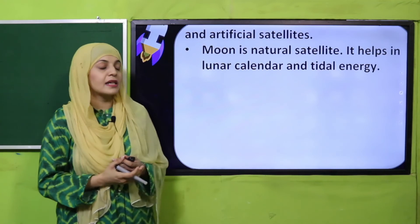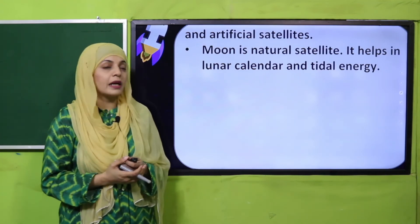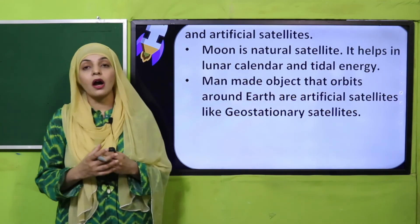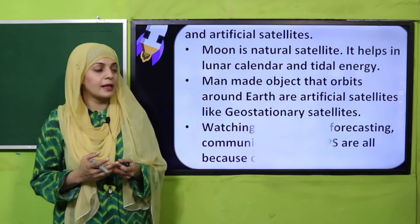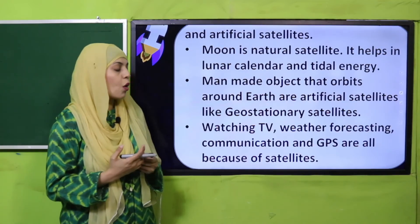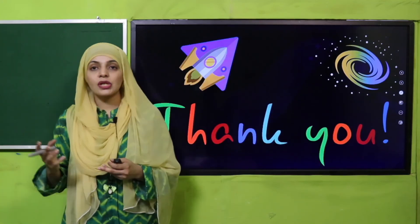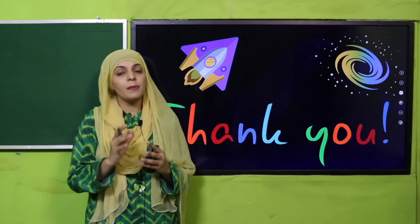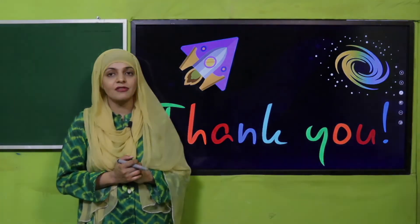The moon is the natural satellite and it helps with the lunar calendar and tidal energy. Man-made objects that orbit around the Earth are artificial satellites. Geostationary satellites enable watching TV, weather forecasting, communication, and GPS. I hope now you know all about space and its technologies. Keep everyone around you safe, have a good day, thank you so much.